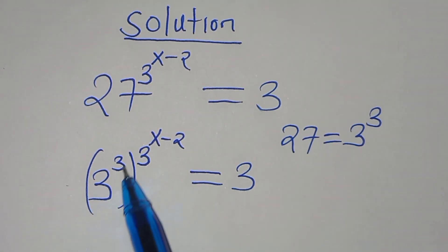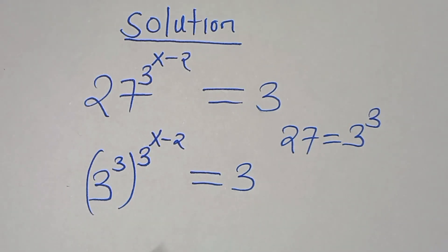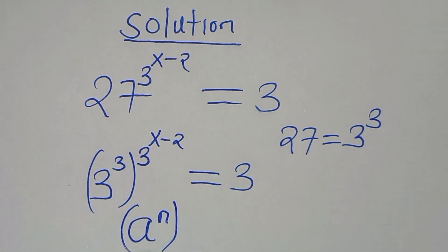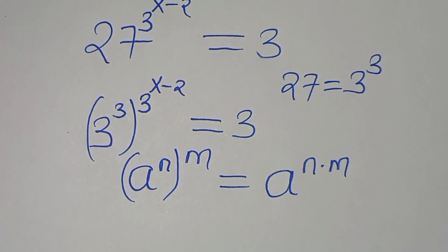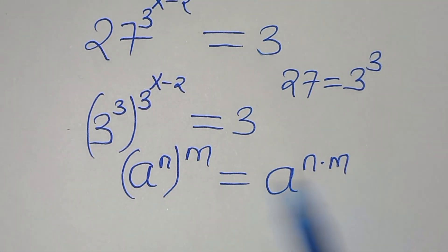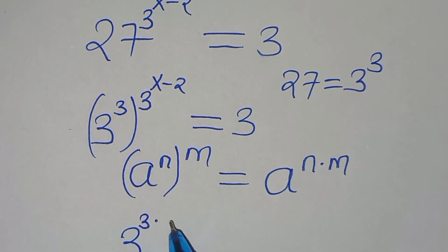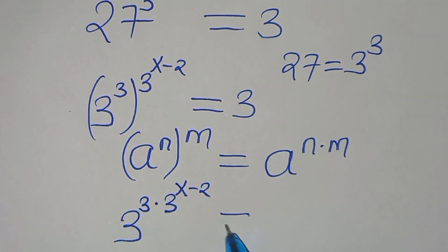We find that 3 to the power of 3, raised to the power of 3 raised to the power of x minus 2, is in the form of a to the power of n, raised to the power of m, which we can express as a to the power of n times m. Applying this exponent property, we have 3 to the power of 3 times 3 raised to the power of x minus 2, equals 3.